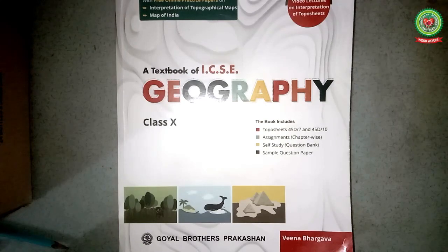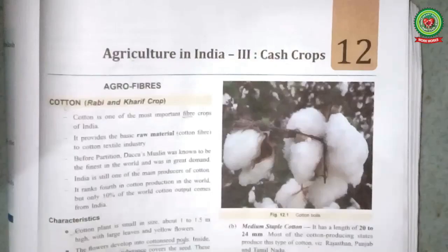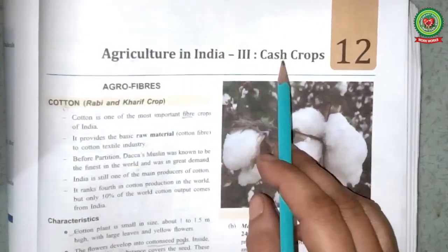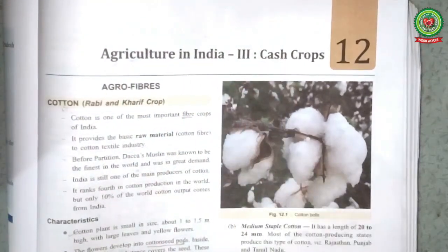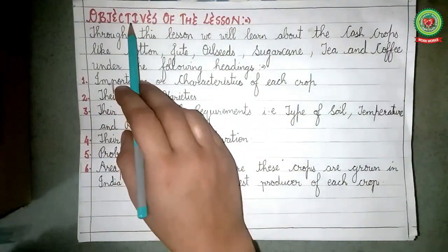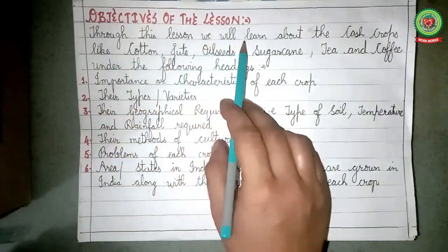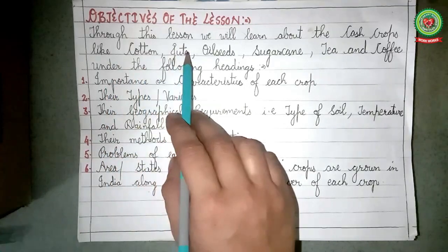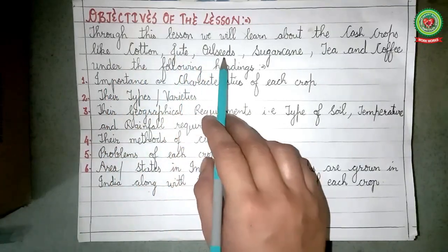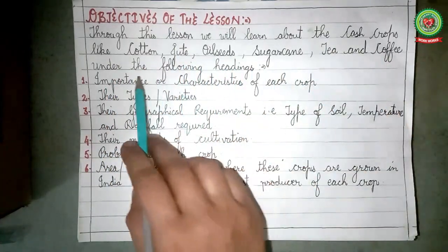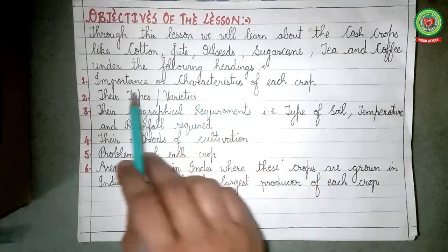Welcome to the geography class. The lesson I will continue today is agriculture in India, part three: cash crops. Through this lesson we will learn about cash crops like cotton, jute, oil seeds, sugarcane, tea, and coffee.